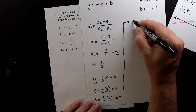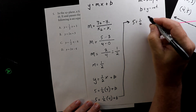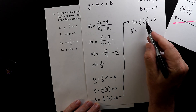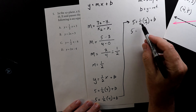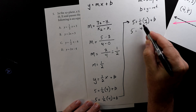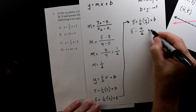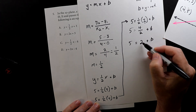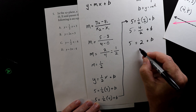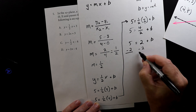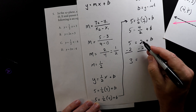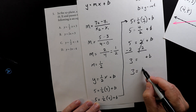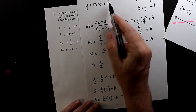So 5 equals one-half times 4. One-half times 4 equals 4 over 2, which equals 2. So we have 5 equals 2 plus b. To get b by itself, I subtract 2 from both sides: 5 minus 2 is 3, and 2 minus 2 is 0. So 3 equals b.